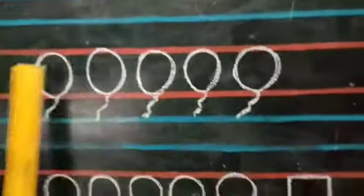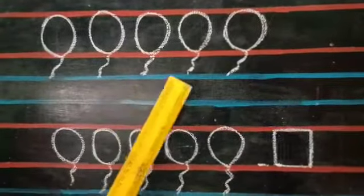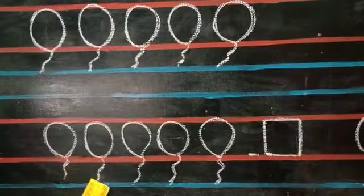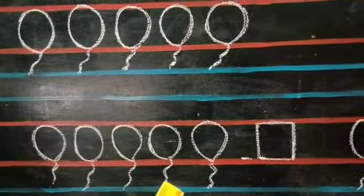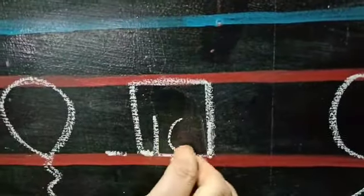Children, let's count the number of balloons here. 1, 2, 3, 4, 5, 6, 7, 8, 9, 10. I am going to write 1, 0 - 10.